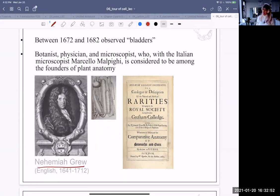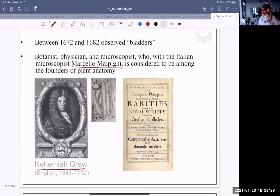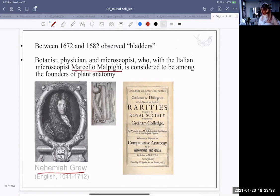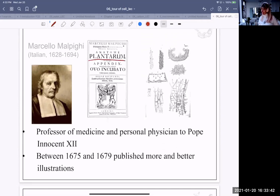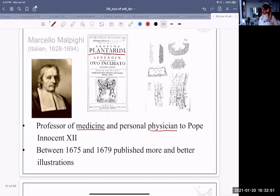This chap, Nehemiah Grew. He was a botanist and a physician and a microscopist. So, gentlemen of leisure were often all of these things. Like, if you had to go and carry the wood, you know, gather the wood, carry the water, whatever. If you had to grow your crops, then you didn't really have time to think. But gentlemen of leisure generally did. And women of leisure as well. Although they would not have been acknowledged back then, unfortunately. Yeah. So, here's another microscopist, Marcello Malpighi. They probably founded plant anatomy. So, very into plants. Yeah. Here's Malpighi. The Anatome Plantarum. He was also a professor of medicine and a physician to the Pope. He kept publishing more and better illustrations. So, he was also quite adept at drawing.